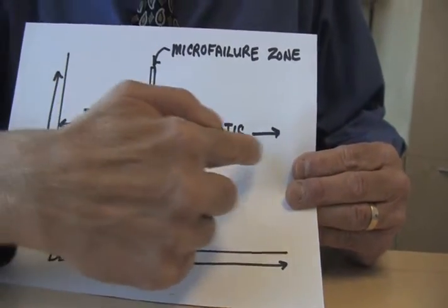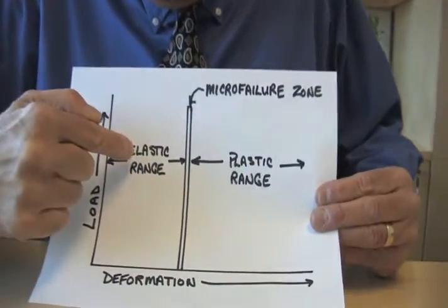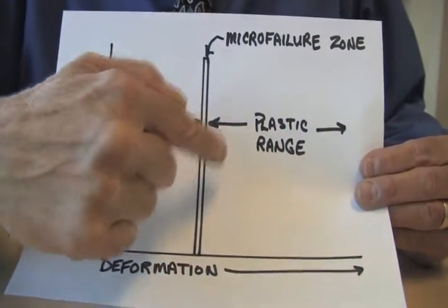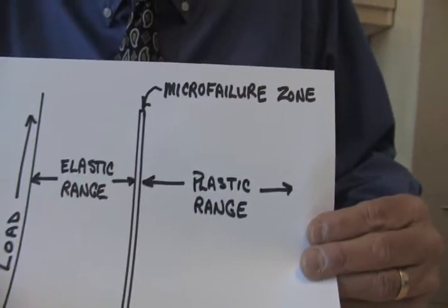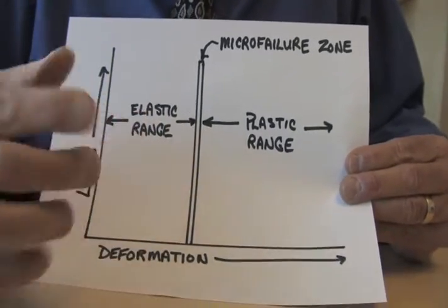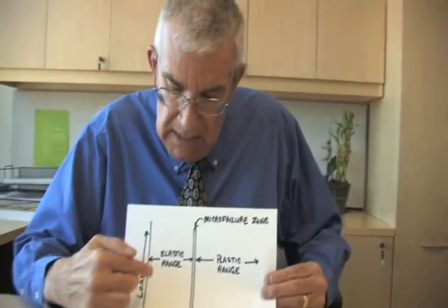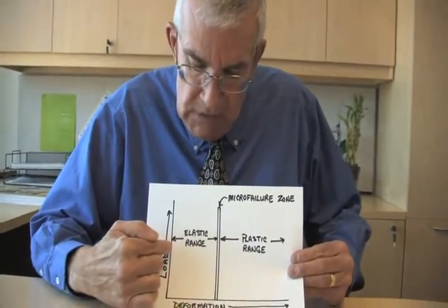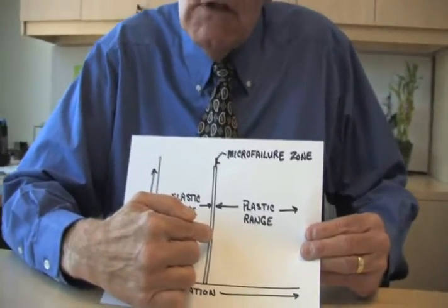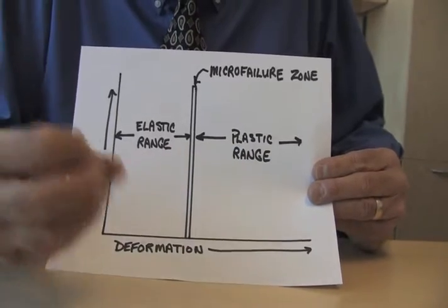If the tissues enter into the plastic range, that is going to mean permanent deformation of the tissues, like when you suffer an ankle sprain. You'll notice that the zone separating the elastic range and the plastic range is referred to as the micro failure zone. If we cannot keep the tissues within the elastic range and they begin to enter into the micro failure zone, what will now happen is an increase in not only tissue deformation, but also stress.